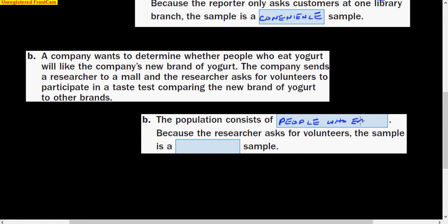Number two here, a company wants to determine whether people who eat yogurt will like the company's new brand of yogurt. The company sends a researcher to a mall, and the researcher asks for volunteers to participate in a taste test comparing the new brand of yogurt to other brands. So the population you want to talk to is people that eat yogurt.